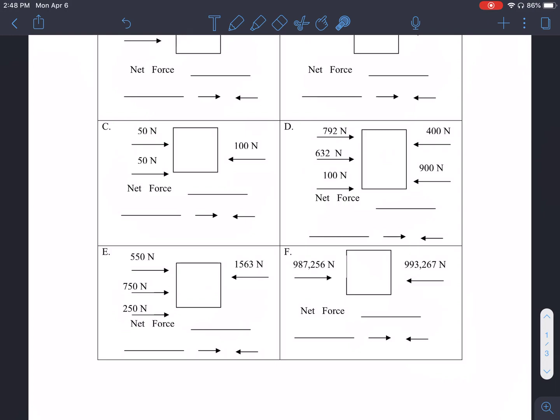Based on whatever the net force is that you calculate, you will determine if it is balanced or unbalanced, and you will write that right here. And then you will circle whichever arrow points in the direction that the box would be moving after these forces are applied.